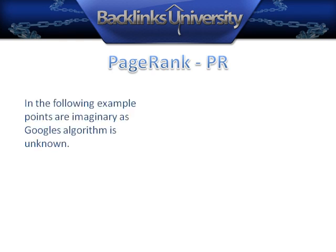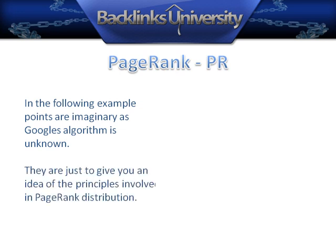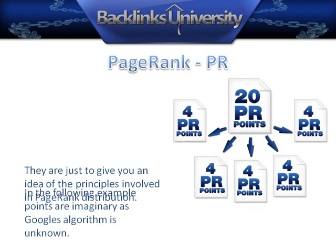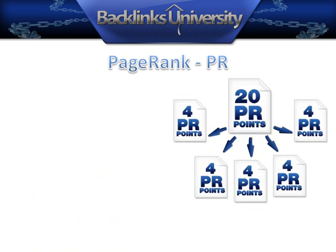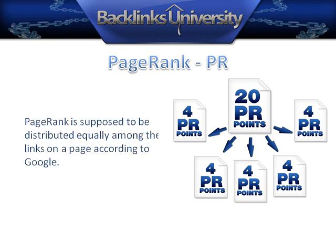In the following example, points are imaginary as Google's algorithm is unknown. They are just to give you an idea of the principles involved in PageRank distribution. PageRank is supposed to be distributed equally among the links on a page according to Google.